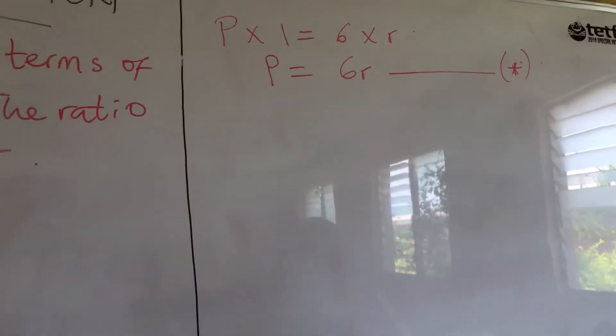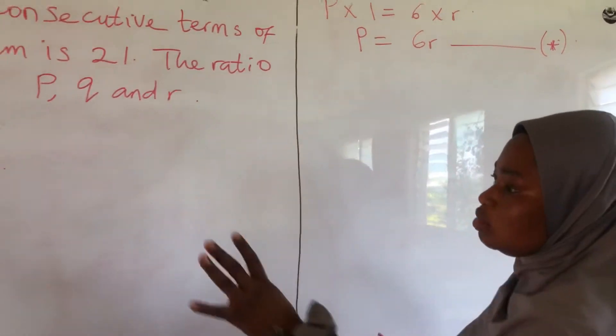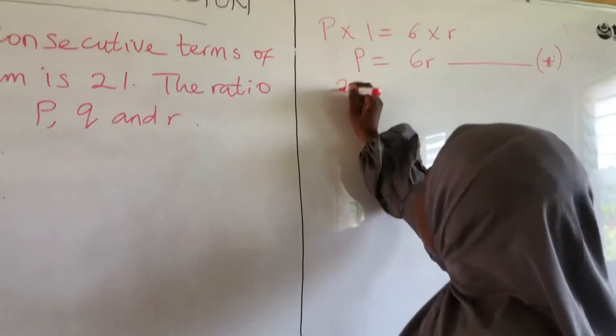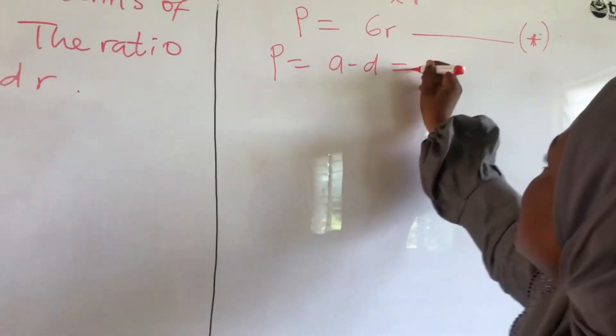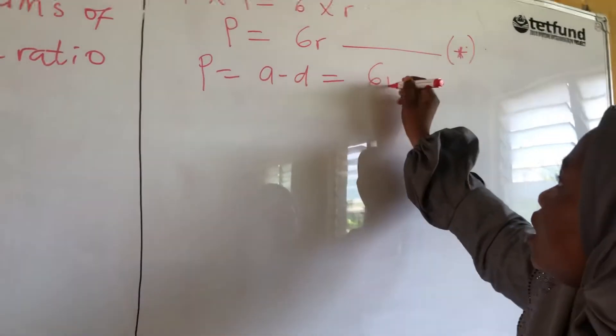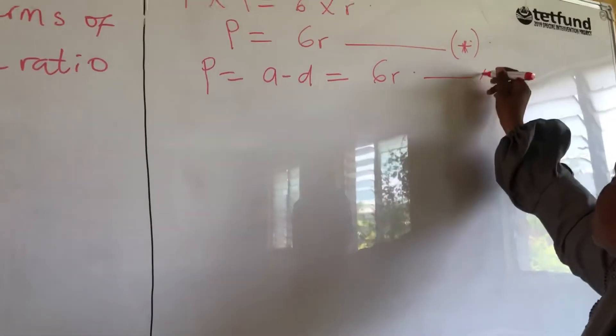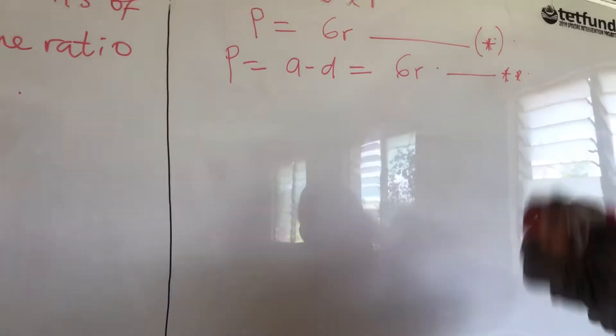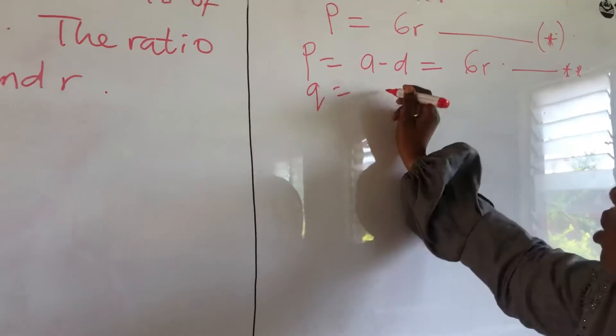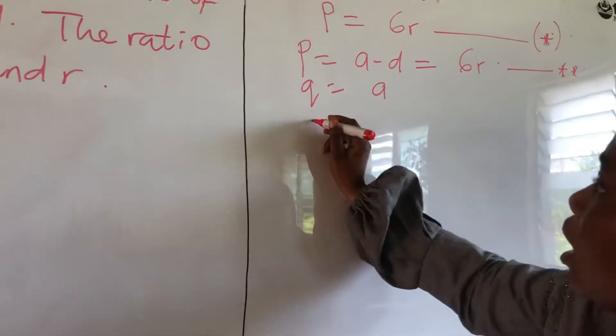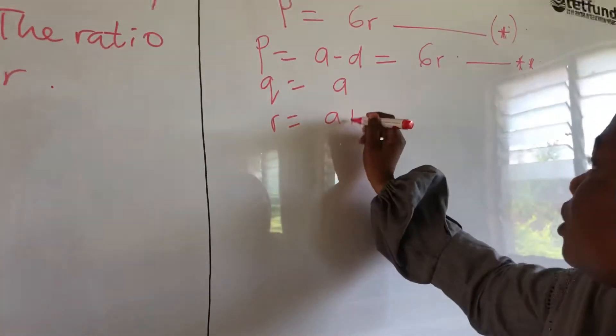Now, the next thing to do is compare that our P is the same thing as A minus D and the same thing as 6R. So, note that as well. Here Q is equal to A, R is equal to A plus D.